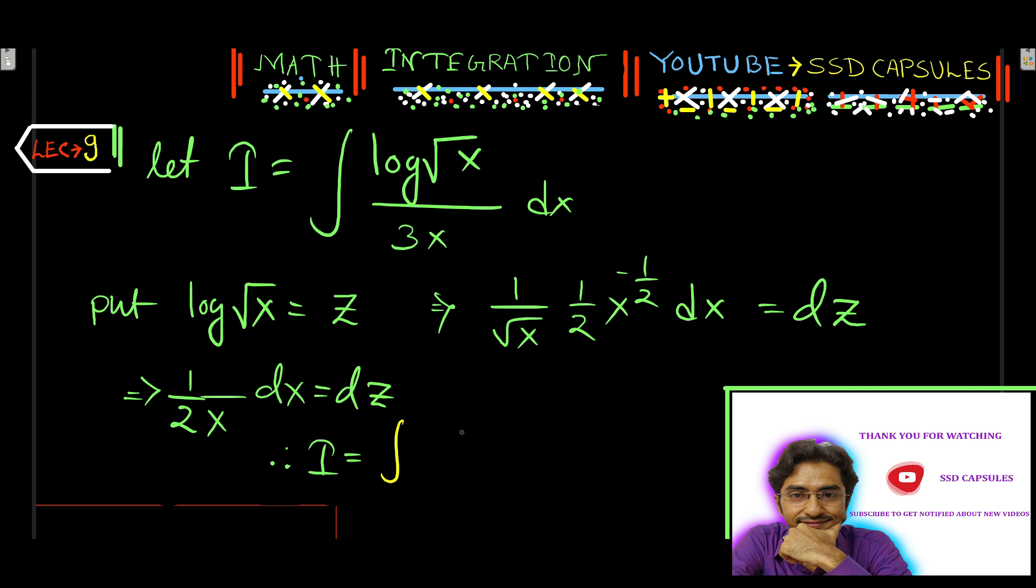Log root x means z. Here 1 by 3, 1 by 3 integration. Log root x means z, z. dx by x, dx by x means 2z, 2dz.